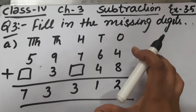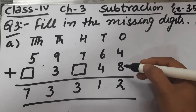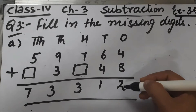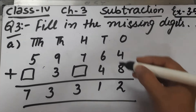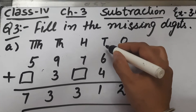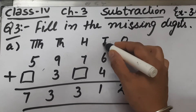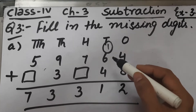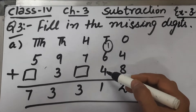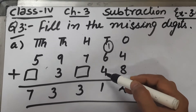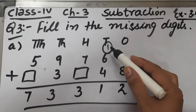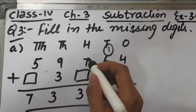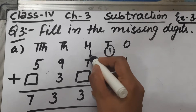This is an addition sum. 4 plus 8 is 12 — 2 will come here and 1 will be carried. Now 6 plus 4 is 10, and 10 plus 1 is 11 — 1 will come here and 1 will be carried.